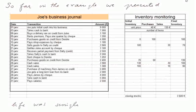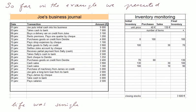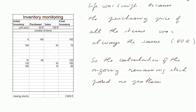So far in the example we presented, life was simple. Here was the journal, and next to it I put a page called inventory monitoring, that kept track of what was going on with the ongoing final inventory. The main objective of this page was to compute the final stocks at the end of the cycle, and the figure was very simple to compute — it was the number of items remaining in stocks multiplied by the purchasing price of each item, 40 euros, giving 3,600 euros. Life was simple because the purchasing price of all the items was always the same, 40 euros, so the calculation of remaining stocks posed no problem.